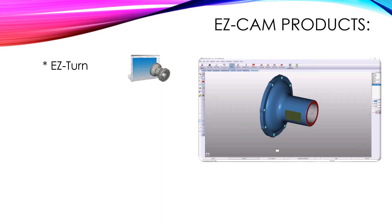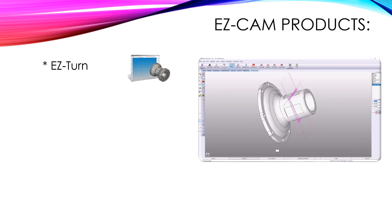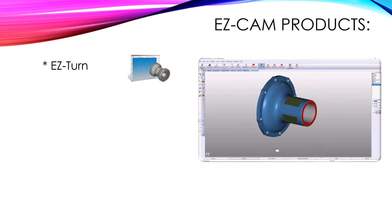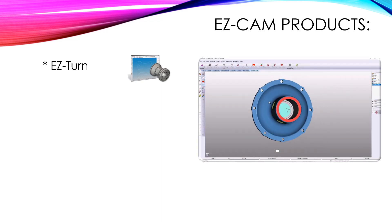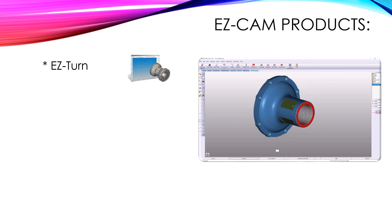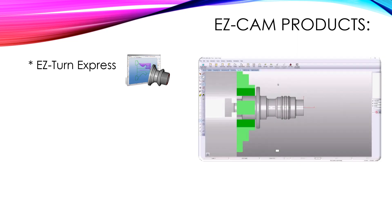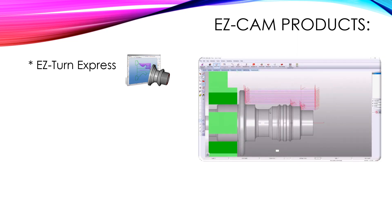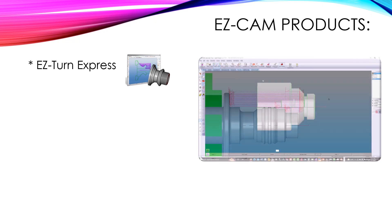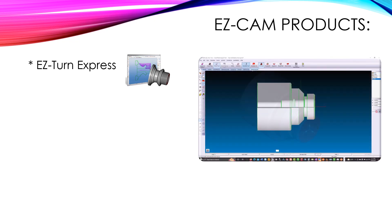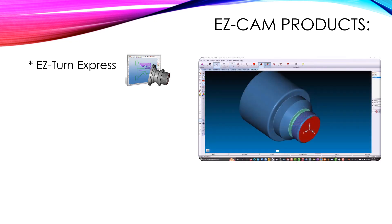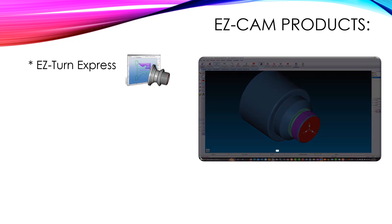EasyTurn's main function over the Turn Express is its live tooling and multi-axis multi-spindle support. EasyTurn Express supports all 2-axis turning. There are wizards for roughing and finishing, and there is also an option for canned cycle output in the G-code.